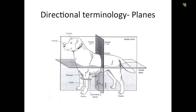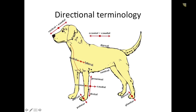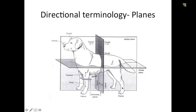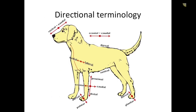The transverse plane cuts the animal into cranial and caudal. The dorsal plane divides dorsal and ventral. The sagittal or median plane divides into lateral and medial aspects. That's just another image to give you further in-depth understanding.